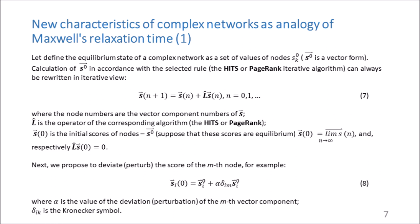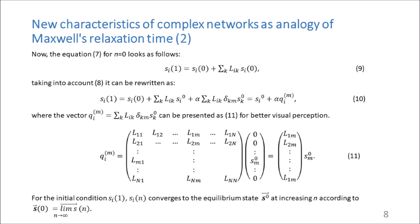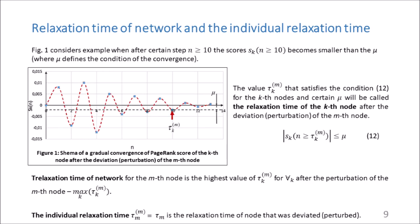The deviation of this vector due to the deviation of one of its components leads to the non-equilibrium state of the system. Equation 7 for n equal to 0 looks like equation 9, and taking into account equation 8, it can be rewritten as equation 10. As n increases, the solution converges to the equilibrium state. The value that satisfies condition 12 for the k-th node will be called the relaxation time of the k-th node after the perturbation of the m-th node. In general, we are interested in the relaxation time of the network for the m-th node — the highest value of tau for all nodes after the perturbation of the m-th node.